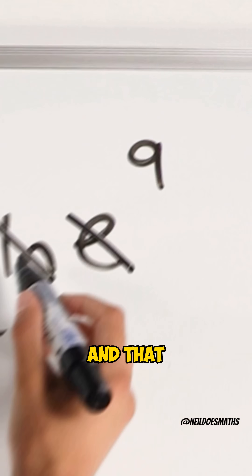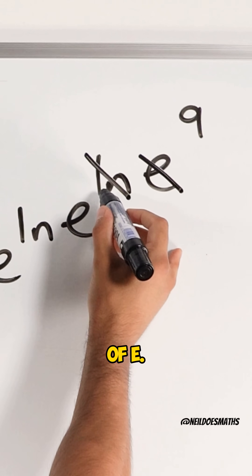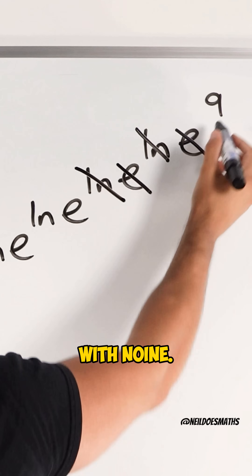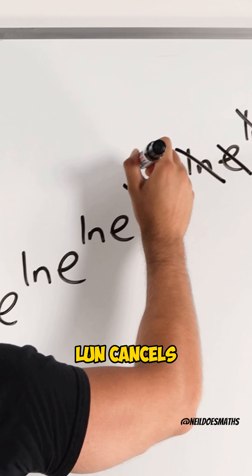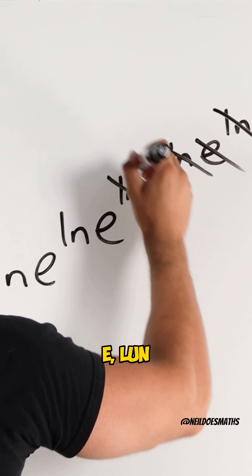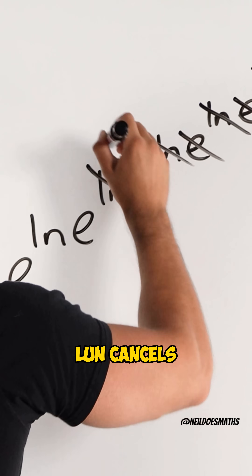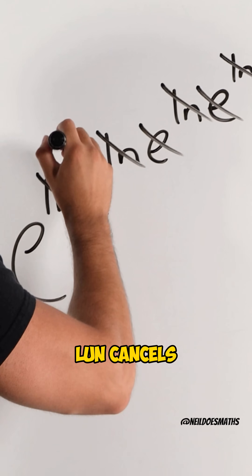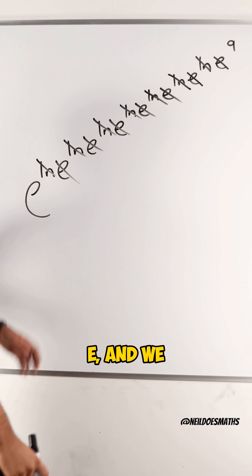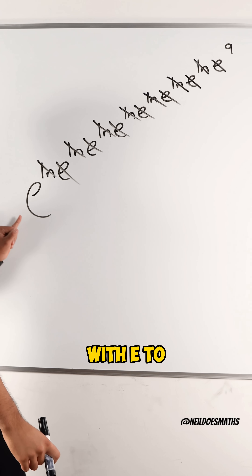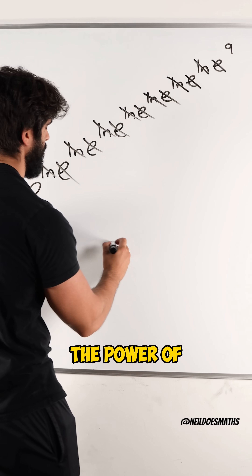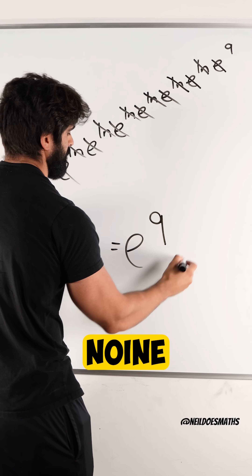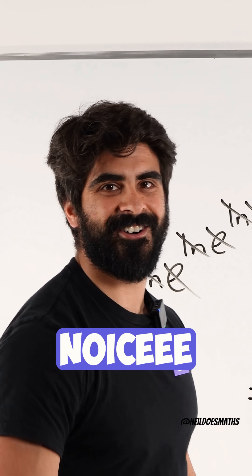We're left with 9, and that attaches to the power of e. ln cancels e, we're left with 9. ln cancels e, ln cancels e, ln cancels e — and we are left with e to the power of 9. Nice.